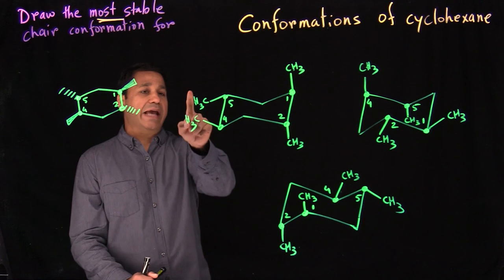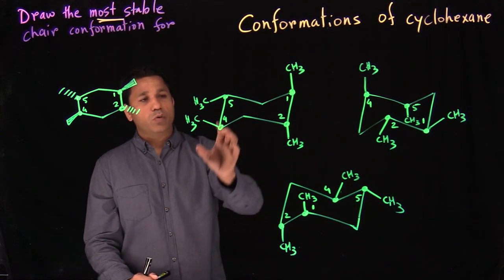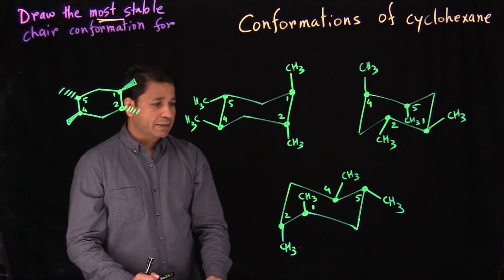The key principle throughout: more equatorial substituents means more stable the structure is.